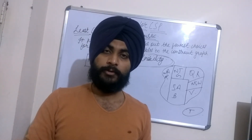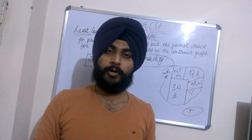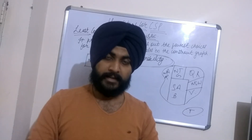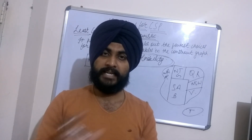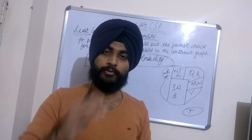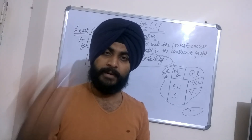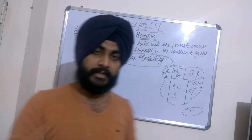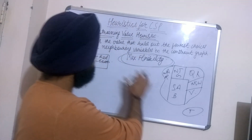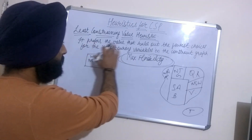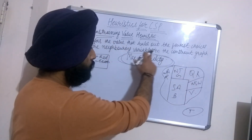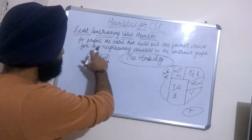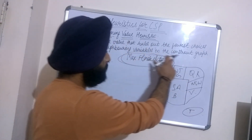Basically, the least constraining value heuristic is used when we want to explore many paths to reach the final solution of a problem — like we want to explore a lot of options and many ways through which the problem can be solved. So essentially, it prefers the value that rules out the fewest choices for the neighboring variables in the constraint graph.